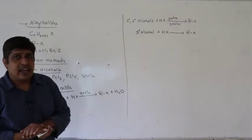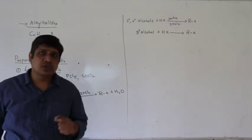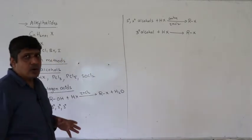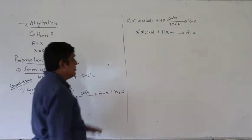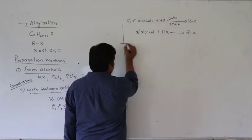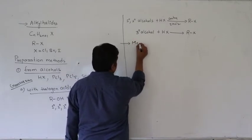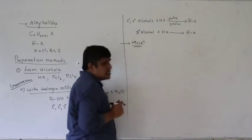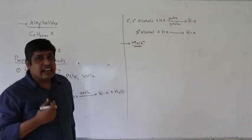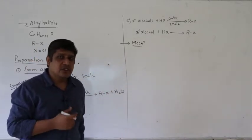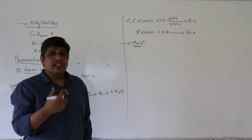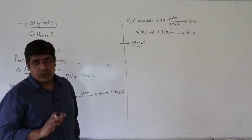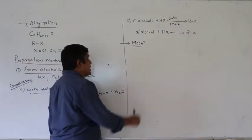The use of anhydrous zinc chloride is not required for tertiary alcohols. Let us see why. The question is: why do tertiary alcohols react readily with halogen acids even in the absence of zinc chloride? So that is what we are going to study. First, let us see the general mechanism.